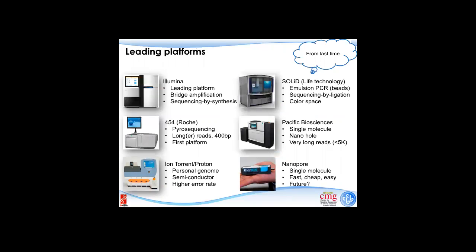We talked intensively about the leading platforms and their biochemistry — why they sequence so fast. We went through the Illumina protocol, SOLiD briefly, PacBio, Ion Torrent, and Nanopore. I want to pinpoint a few key things. From Illumina, SOLiD, Ion Torrent, and also Ion Torrent — these four technologies we refer to as second generation sequencing. For Pacific Biosciences and Nanopore, some people call these third generation sequencing.